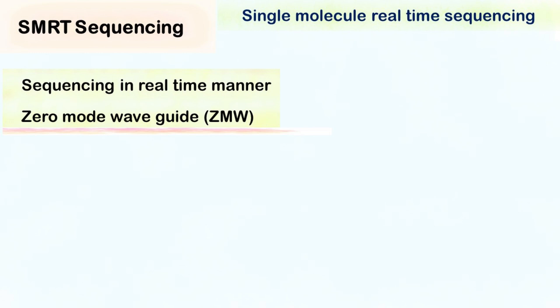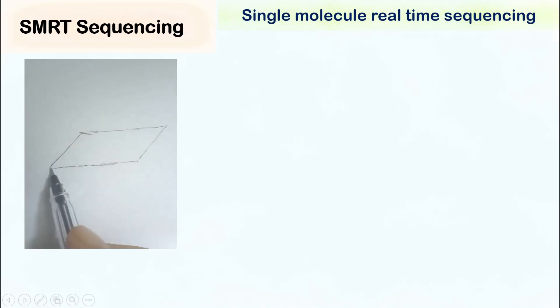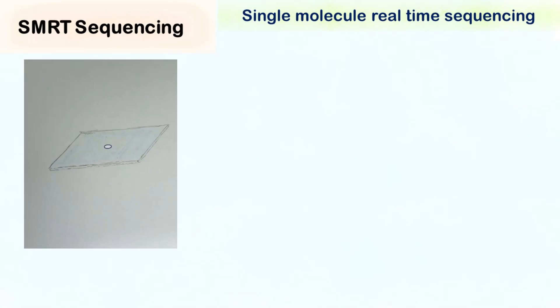Now, let's understand what zero-mode waveguide means. Let's see this with a simple example. When the light is passed through a pinhole, it undergoes diffraction.